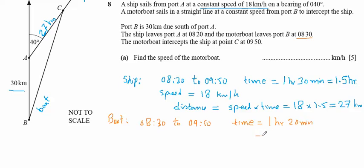So 1 hour and 20 minutes means that 1 plus 20 over 60 hours. So that will become 1 over 3, so it will be 4 over 3 hours.